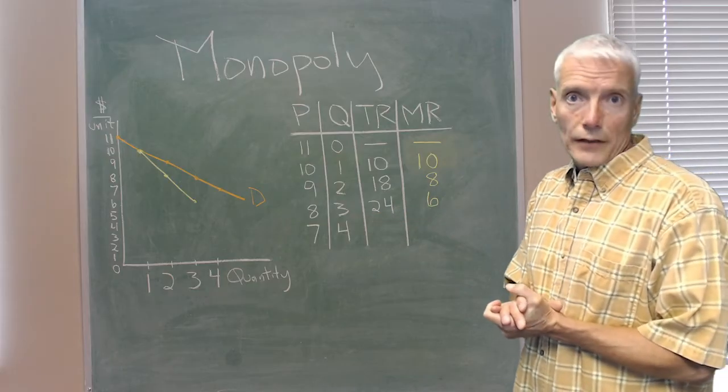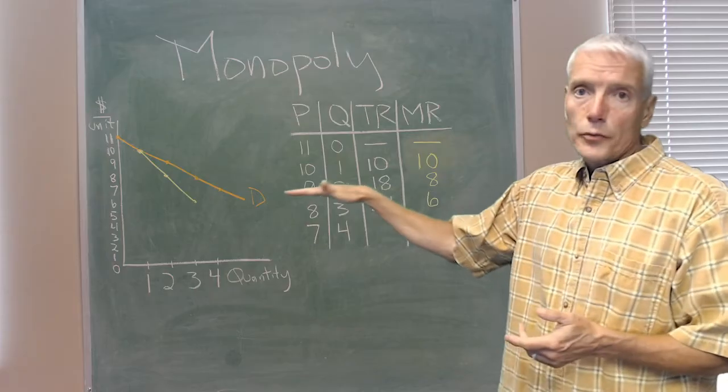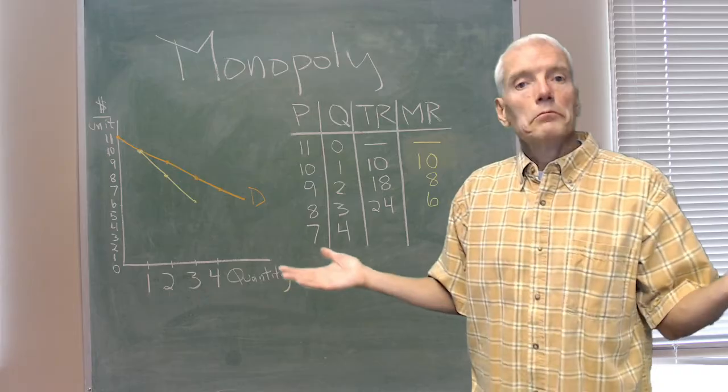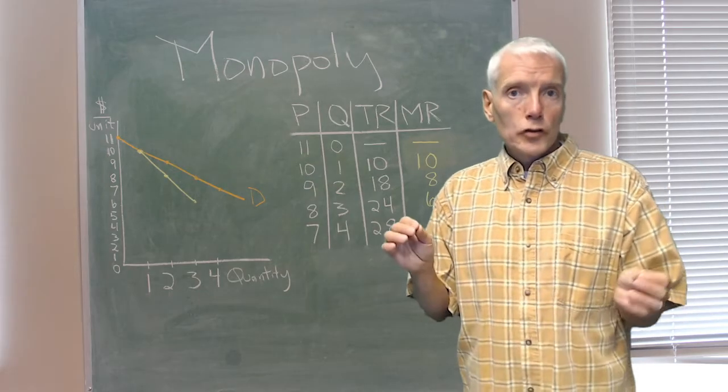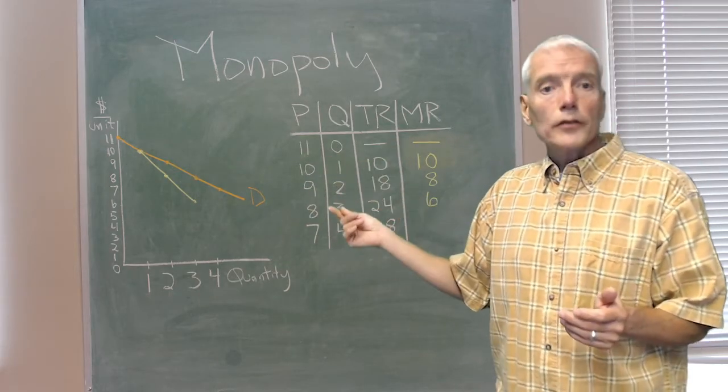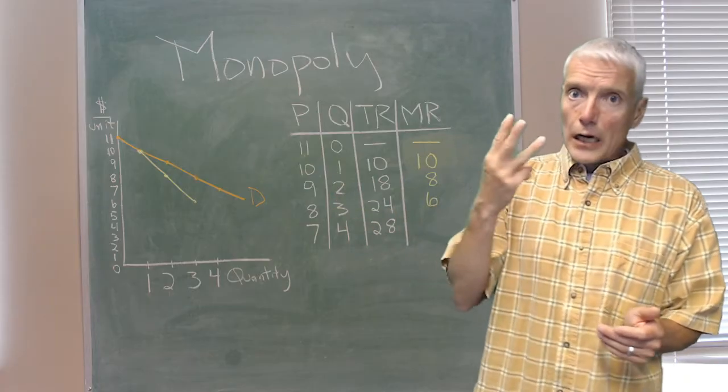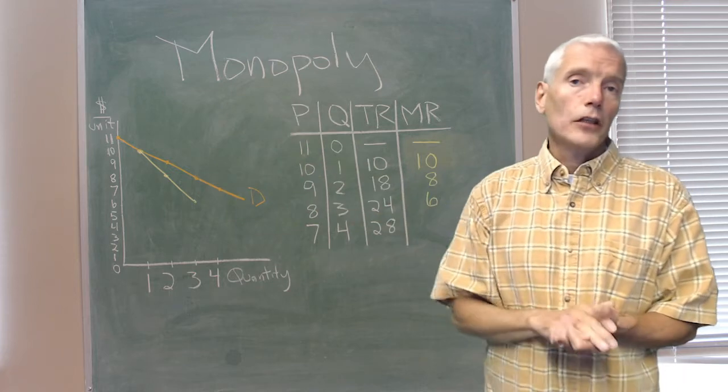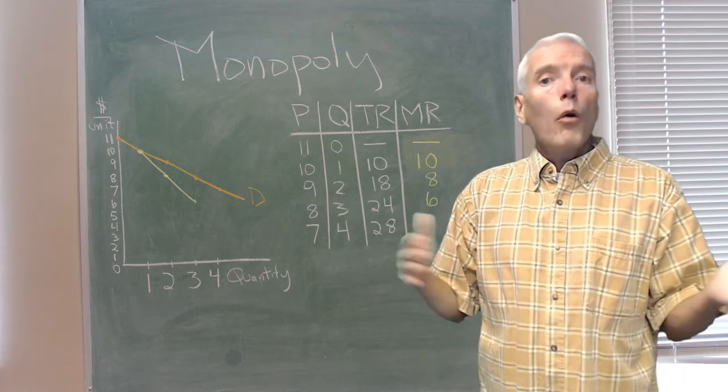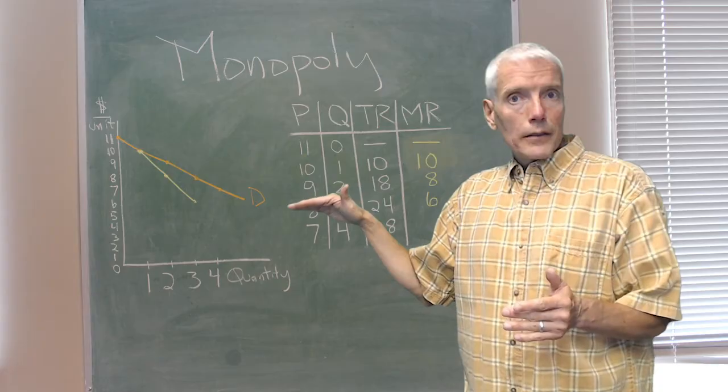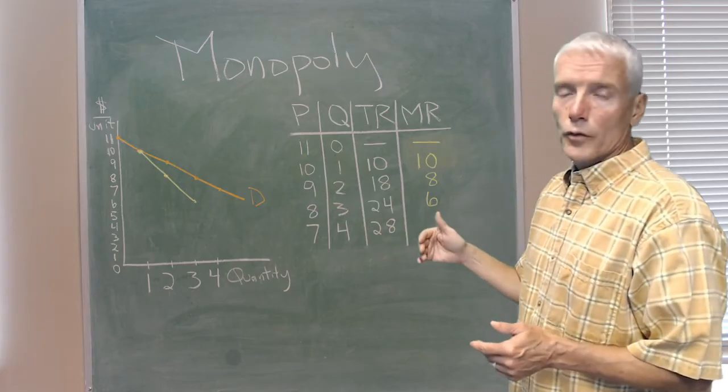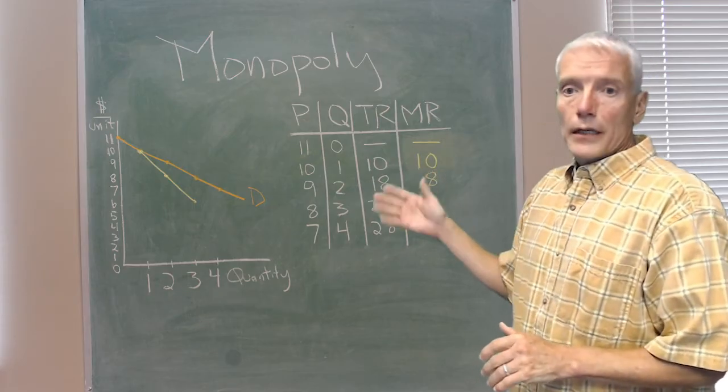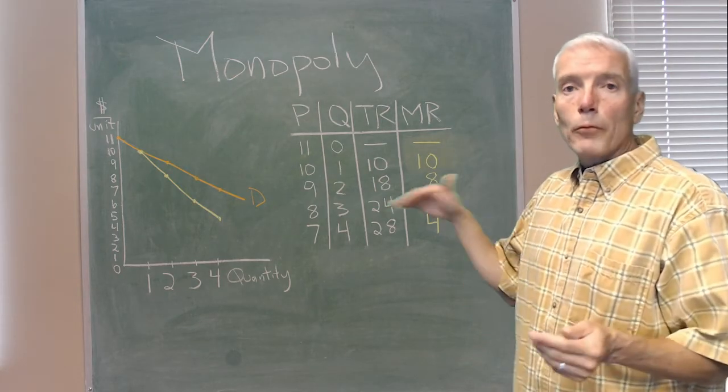And for a fourth unit, it can sell the fourth unit for $7. It has to lower its price on those other units to $7. Its total revenue is 4 times 7, $28. Its marginal revenue can be seen by either looking at the price of $7 minus the dollar it lost on each of those three units when it lowered its price from $8 to $7 in order to sell the fourth one, or $28, the total revenue selling all four minus the $24 total revenue from selling three, again, $4. So the marginal revenue is $4,